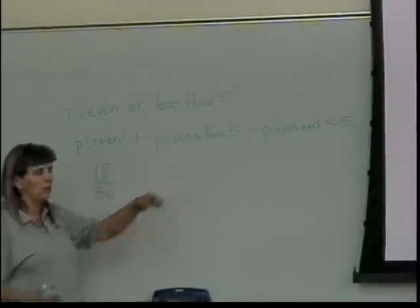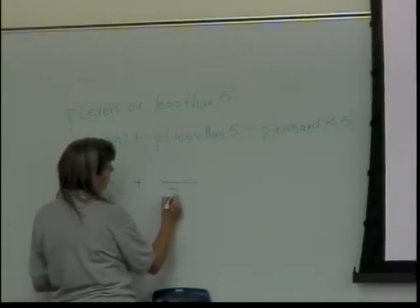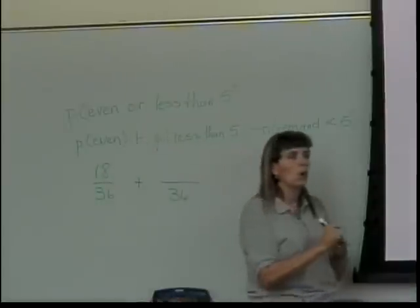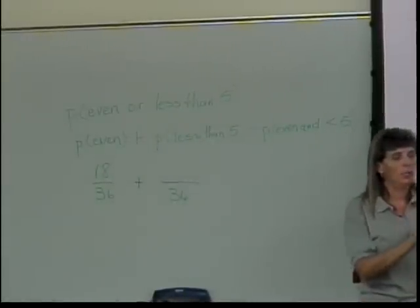What about my probability of getting something less than 5? Let's find out what those are. What qualifies as being less than 5? 4, 3, and 2.